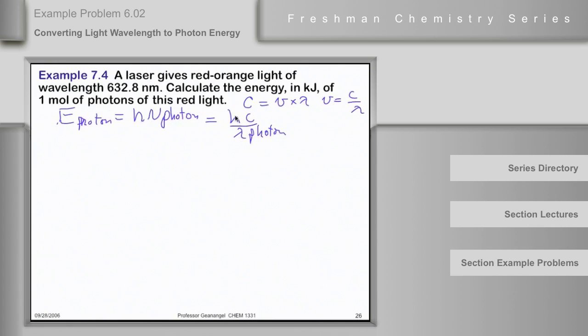And h, of course, is in joule seconds. C is in meters per second. And lambda must be in meters, so we'll end up with joules.